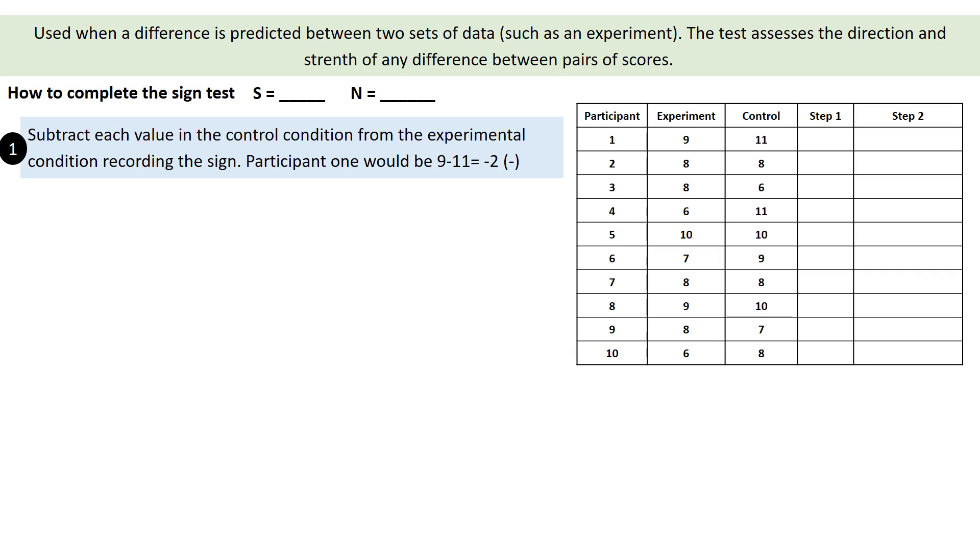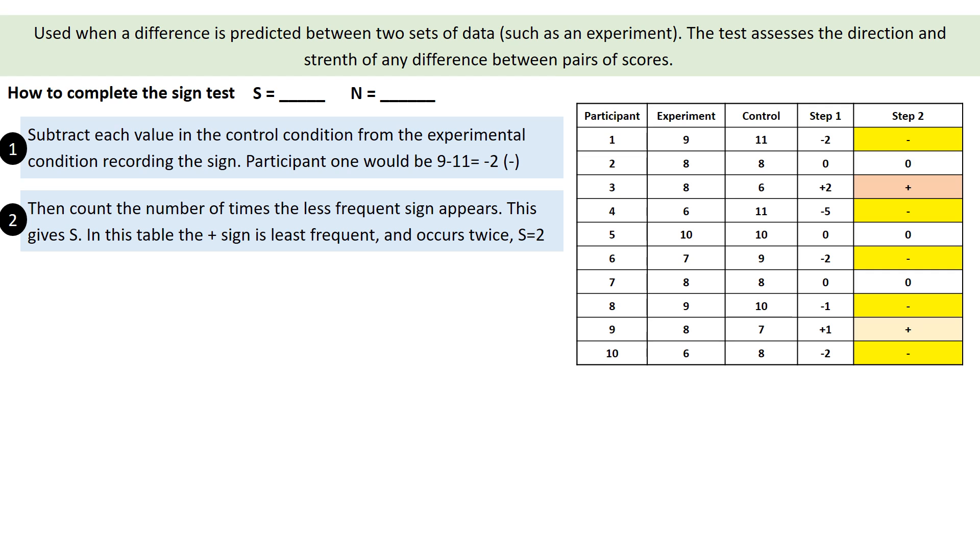What we're going to do next, once we filled in all the numbers, we're going to count the number of times a less frequent sign occurs. What this will work out is it'll give us S. So we'll already have S.